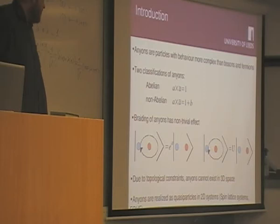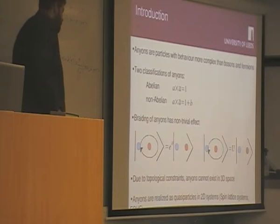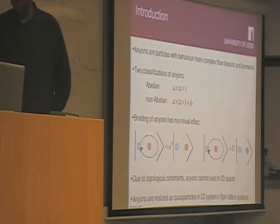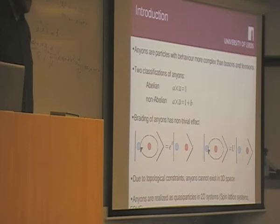But for non-abelian anyons, if you do the same process, you won't just get a phase, but you can get a general unitary operation acting on the fusion space. Due to topological constraints, these particles cannot exist in three-dimensional space, and that's because in 3D a loop around a point can be continuously deformed to a loop that's not around the point, which is trivial.